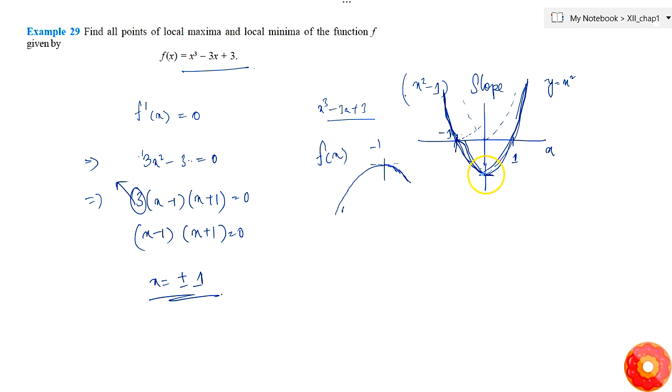It became something like this, then slope started to decrease again in magnitude. Finally it became 0 again and slope started to increase.